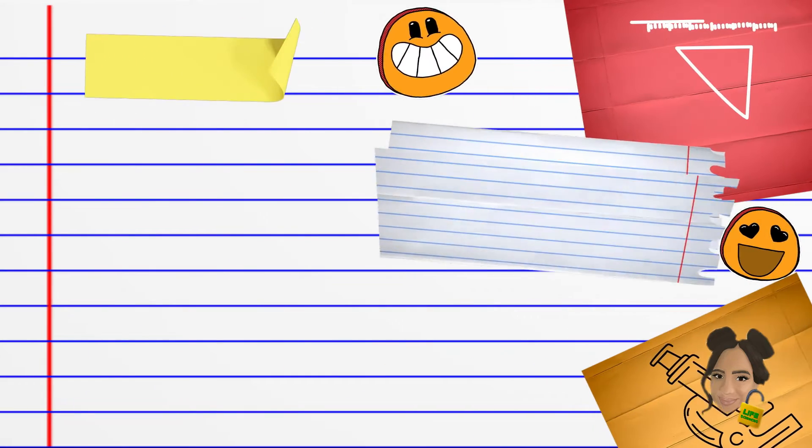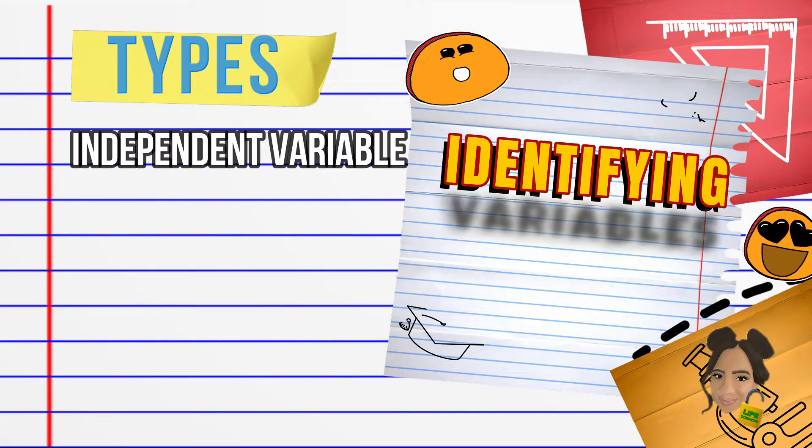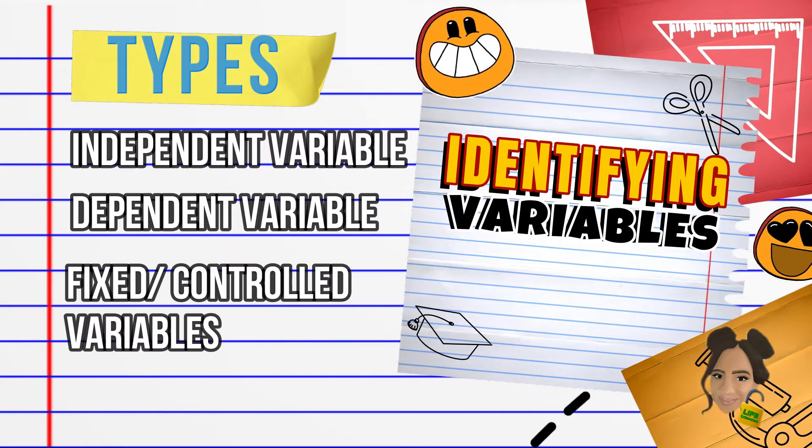There are three main types of variables: the independent variable, the dependent variable, and fixed or controlled variables.